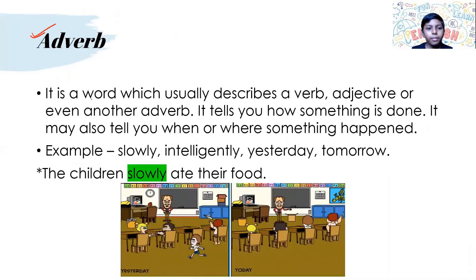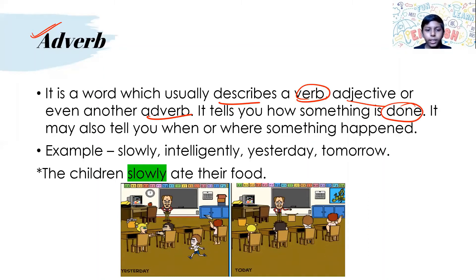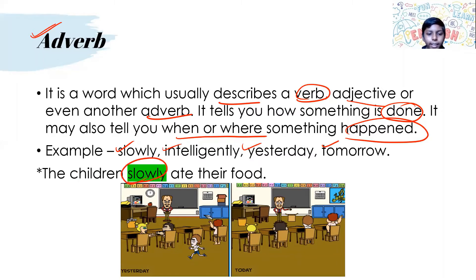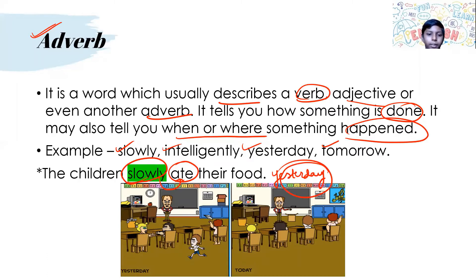Adverb. It is a word that usually describes a verb, adjective, or even another adverb. It tells you how something is done. It may also tell you when or where something happened. Examples: slowly, intelligently, yesterday, tomorrow. Example: 'Children slowly ate their food.' Here slowly tells how the children ate their food. And 'the children slowly ate their food yesterday' — yesterday tells when the action of eating was happening.